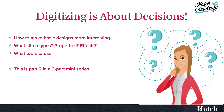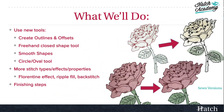So we're going to think about how we want to make these more interesting — that would involve stitch types, properties, effects, and of course we need tools to do that with. In this course we'll learn to use some new tools: the Create Outlines and Offsets tool, the Freehand Close Shape tool, Smooth Shapes in the Edit Objects toolbox, and the Circle Oval tool.